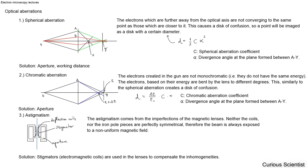Welcome everyone! In this video I will continue the discussion of the last lecture where I was talking about the lenses. Since we have the lenses and we discussed the optics of the electrons, we can continue with the optical aberrations.